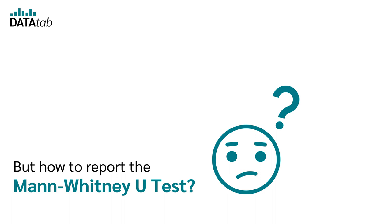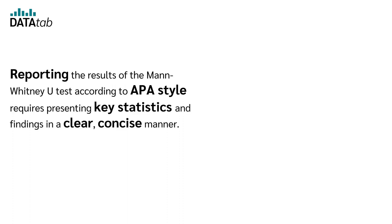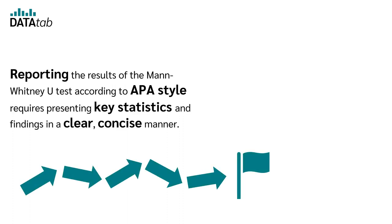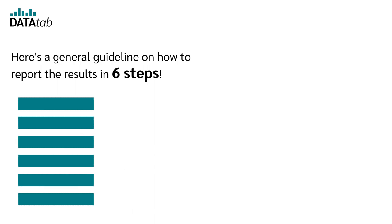Reporting the results of the Mann-Whitney-U test according to APA style requires presenting key statistics and findings in a clear, concise manner. Here is a general guideline on how to report the results in six steps.